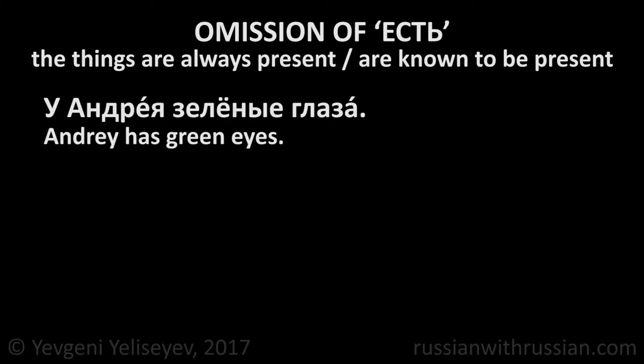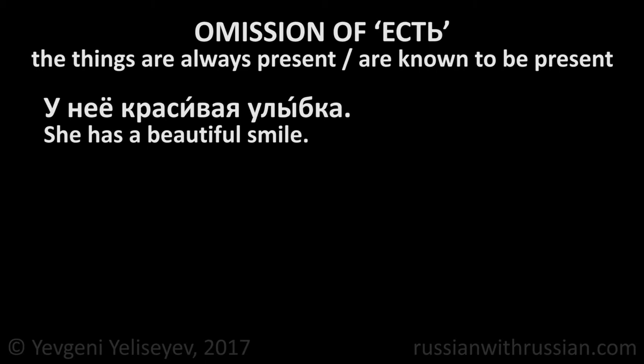Есть may be omitted when we talk about things that are always present or we know in advance about their existence. У Андрея зеленые глаза — Андрей has green eyes. Есть has been omitted because the fact that a person has eyes is obvious. Every person has eyes; the sentence just informs us about the color of Андрей's eyes — his eyes are green. У нее красивая улыбка — She has a beautiful smile. Есть has been omitted because almost everyone can smile, so the fact that she has a smile is obvious, and the sentence just informs us that her smile is beautiful.